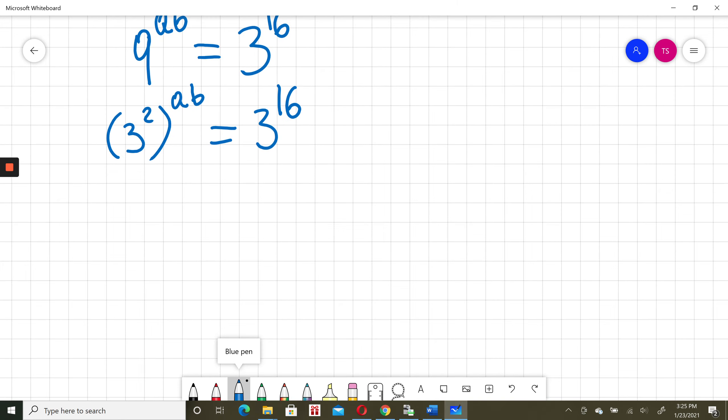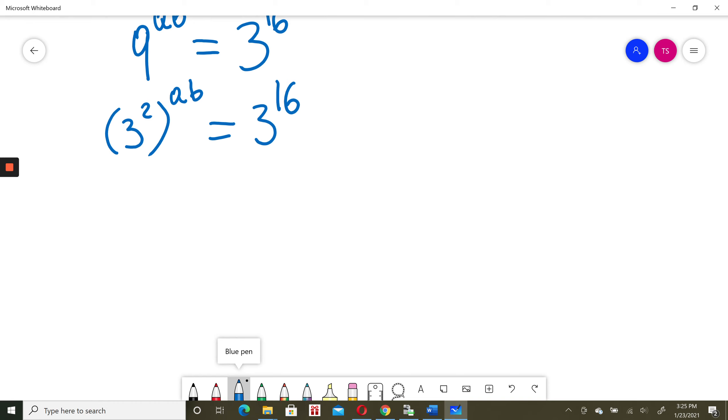At this moment I will use power rule for exponents again, so power to power, I will multiply powers. It will be 3 to the power of 2 times ab equals 3 to the power of 16.